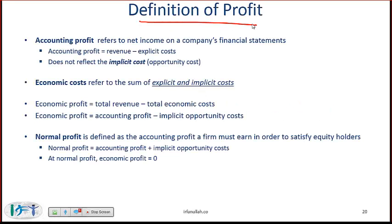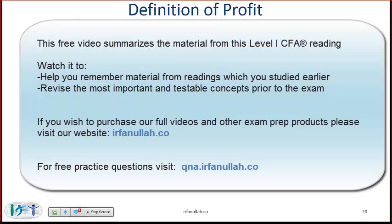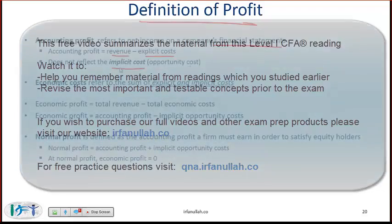First we need to understand the definition of profit. Accounting profit refers to net income on a company's financial statements. Accounting profit is simply revenue minus explicit costs. It does not represent implicit costs, also called opportunity costs. For a public company, the equity invested has an associated cost — the cost of equity — that is not included when you calculate accounting profit. For a small private company where you are using your own facility or not paying yourself a salary, then the rent of that facility or the salary you are not paying yourself would be implicit costs or opportunity costs.